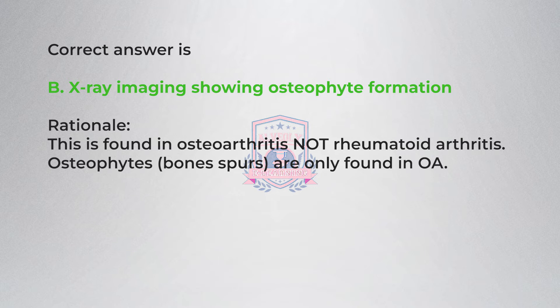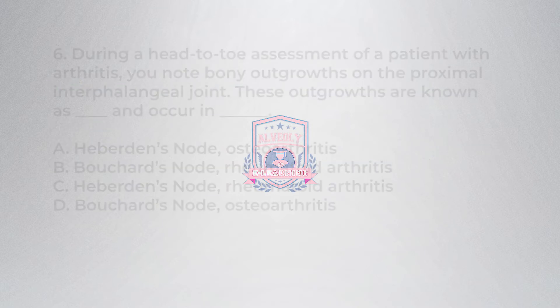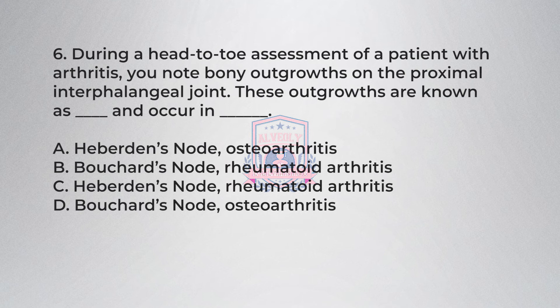Rationale: Osteophyte formation is found in osteoarthritis, not rheumatoid arthritis. Osteophytes (bone spurs) are only found in OA. Question six: During a head-to-toe assessment of a patient with arthritis, you note bony outgrowths on the proximal interphalangeal joint. These outgrowths are known as and occur in...